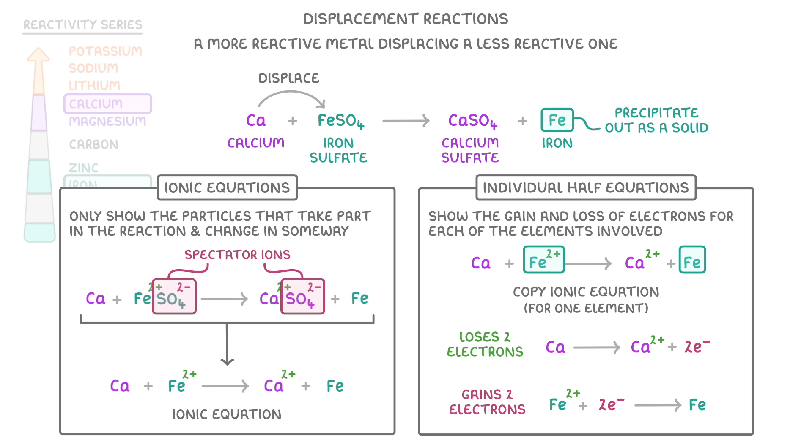Whenever you do these half equations, just check that the overall charge on each side balances. For example, in our iron half equation, we can see that on the left, we have a 2+ charge and two 1- charges, which add together to make zero. And on the right, everything is neutral, so also zero. If you ever find that the overall charges on each side aren't the same, then you've probably put your electrons on the wrong side.